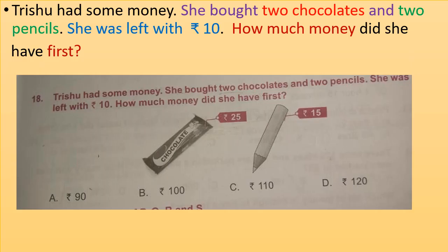Trishu had some money. She bought two chocolates and two pencils. See the picture. She was left with rupees 10. How much money did she have first? Now options are given in the picture. Try to solve the question.